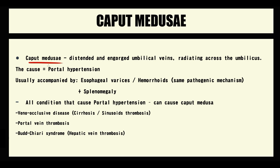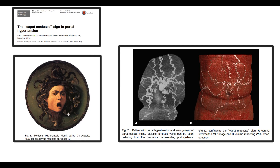The term Caput Medusae is used to describe the distended and engorged umbilical veins that are radiating across the umbilicus. Here we can see a famous Caravaggio picture of Medusa, and on the second image we can see multiple distended veins radiating from the umbilicus. There is definitely some resemblance with the Medusa picture.